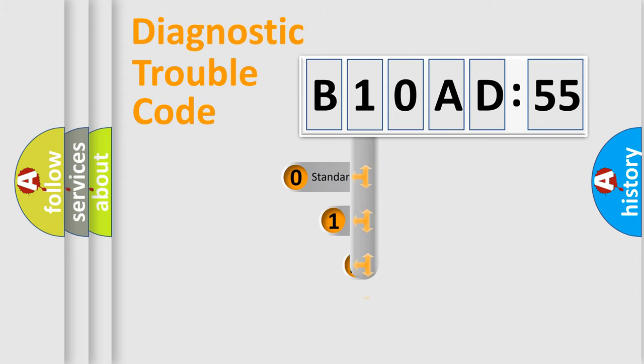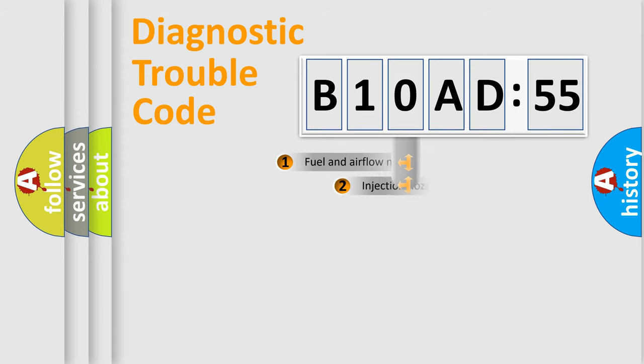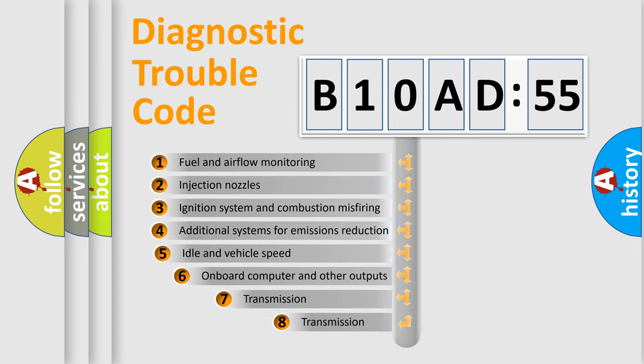This distribution is defined in the first character code. If the second character is expressed as zero, it is a standardized error. In the case of numbers 1, 2, or 3, it is a more specific expression of the car-specific error.